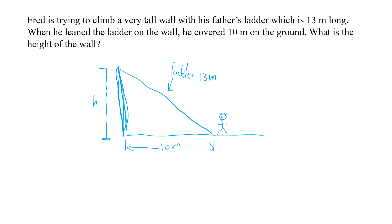Of course, we're assuming that this wall is erected at a 90 degree angle, which is typically the case. With this right angle triangle, we can easily apply Pythagoras' theorem. The theorem states that a squared equals b squared plus c squared, where a is the hypotenuse — the side opposite the right angle — which in this case is represented by the ladder, 13 meters.